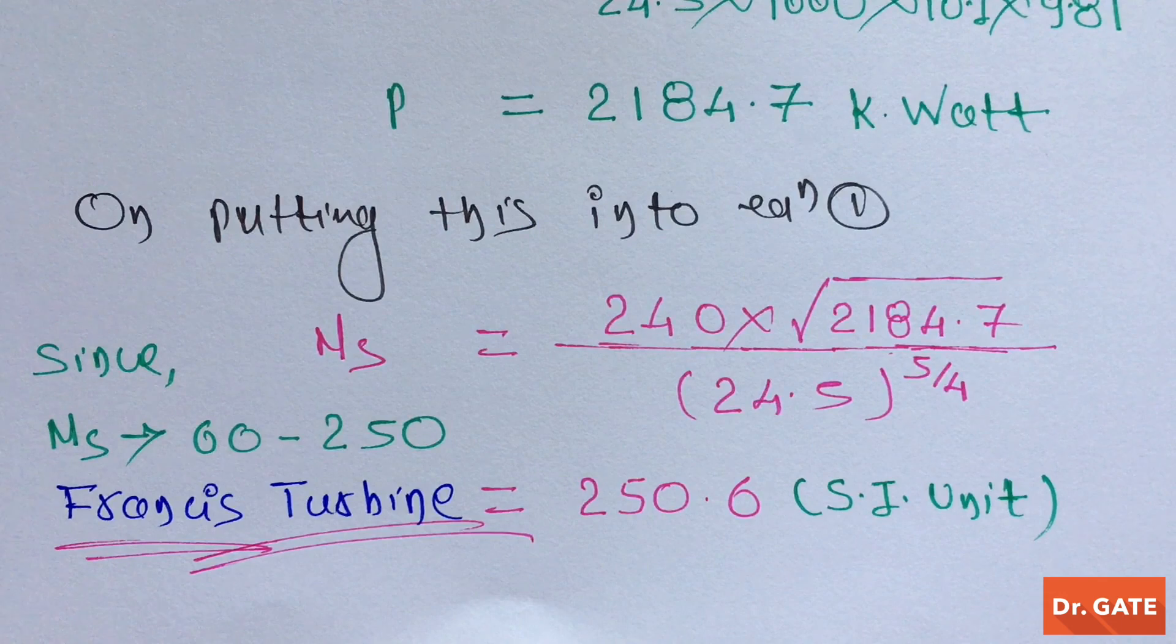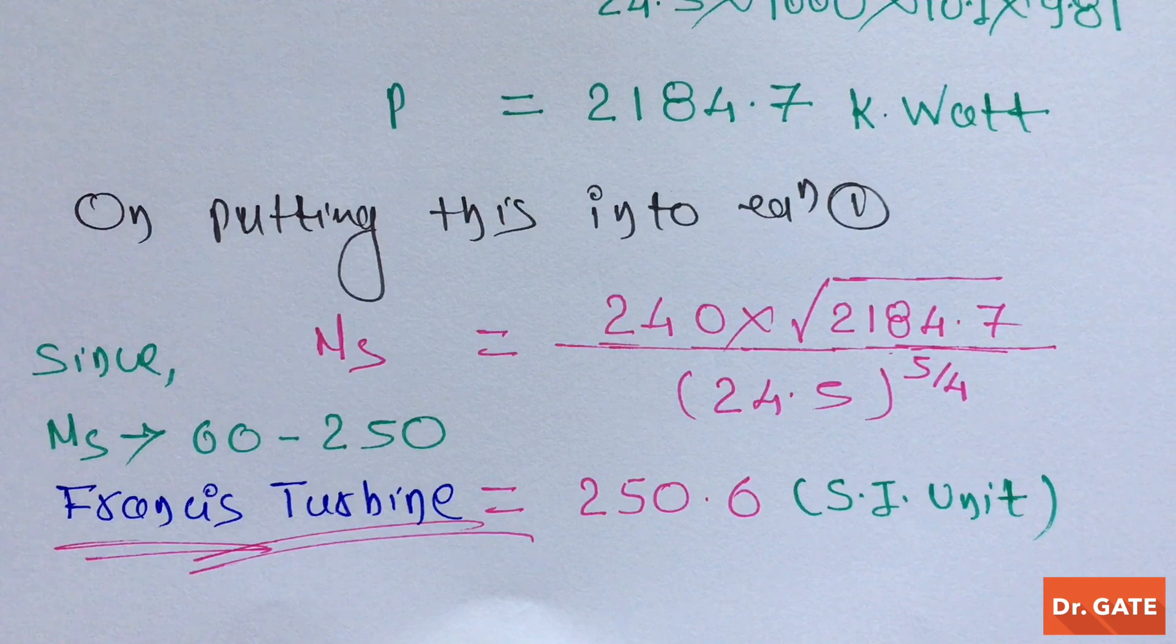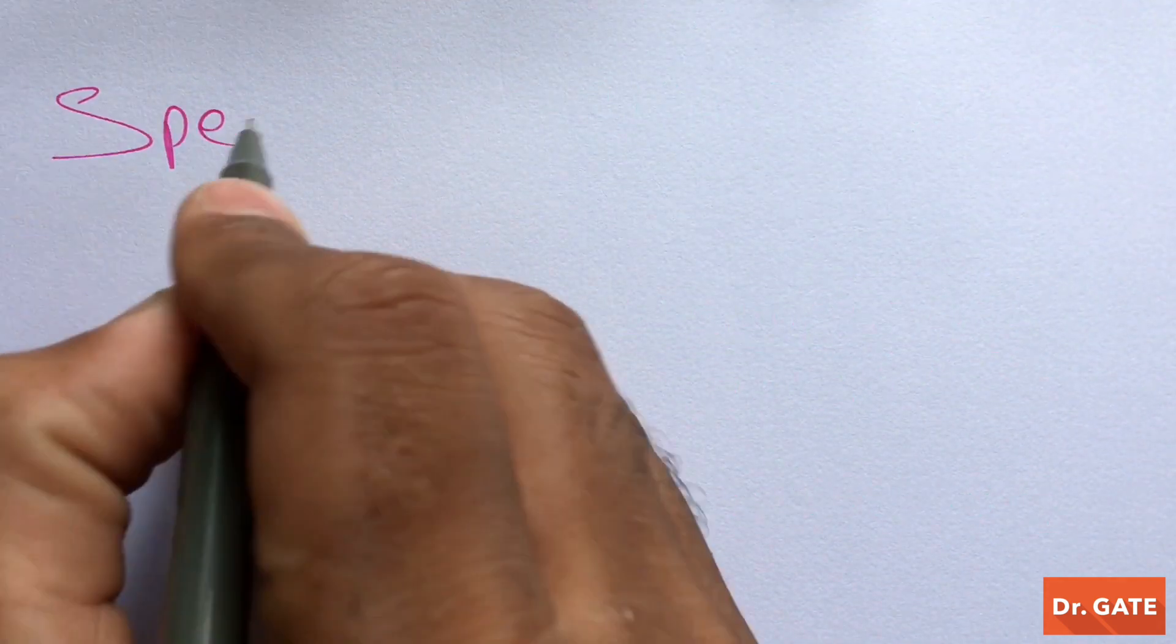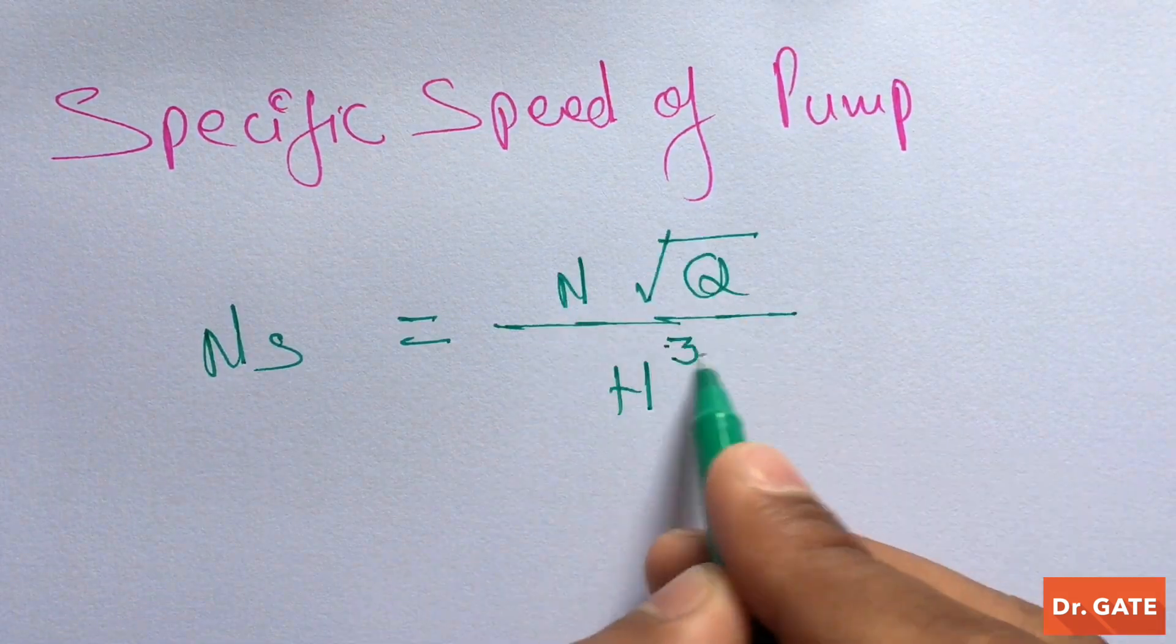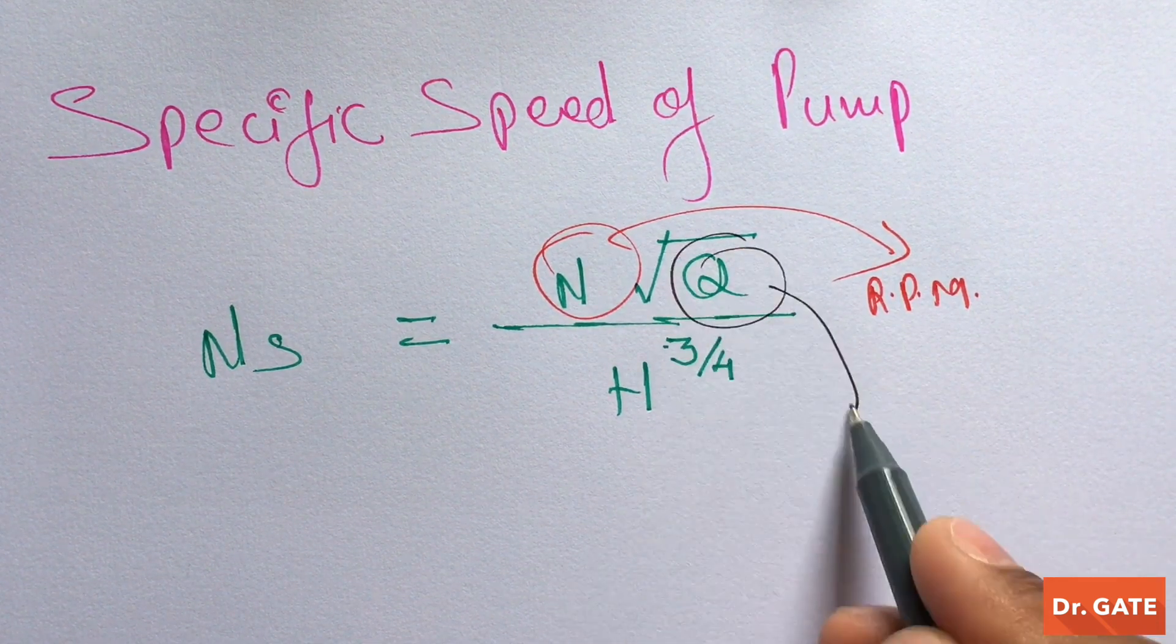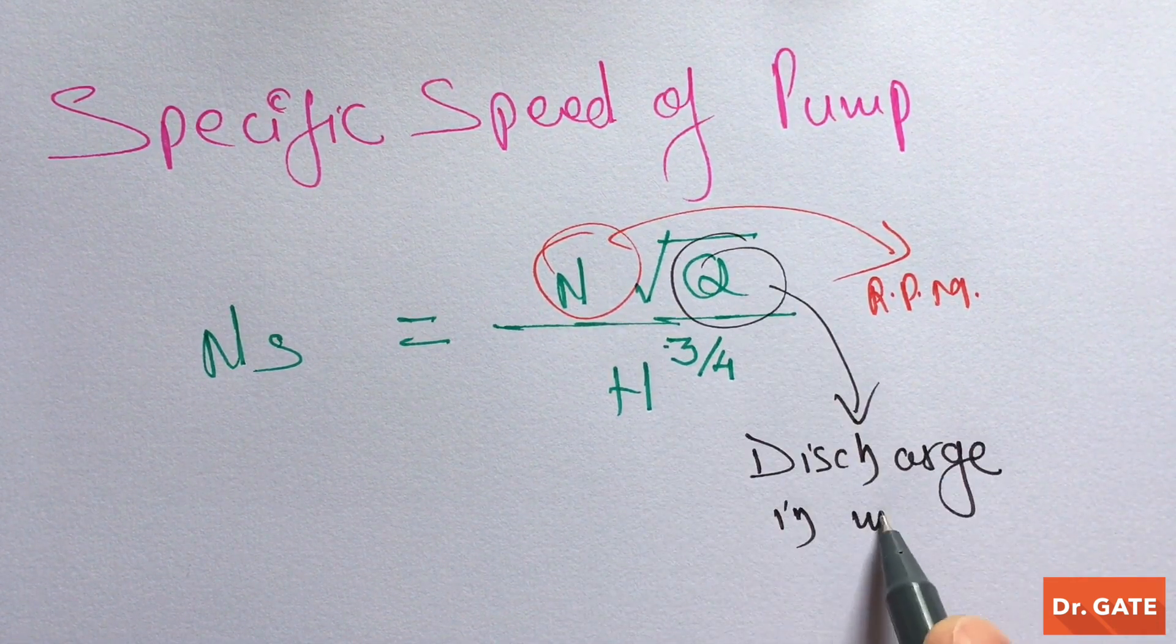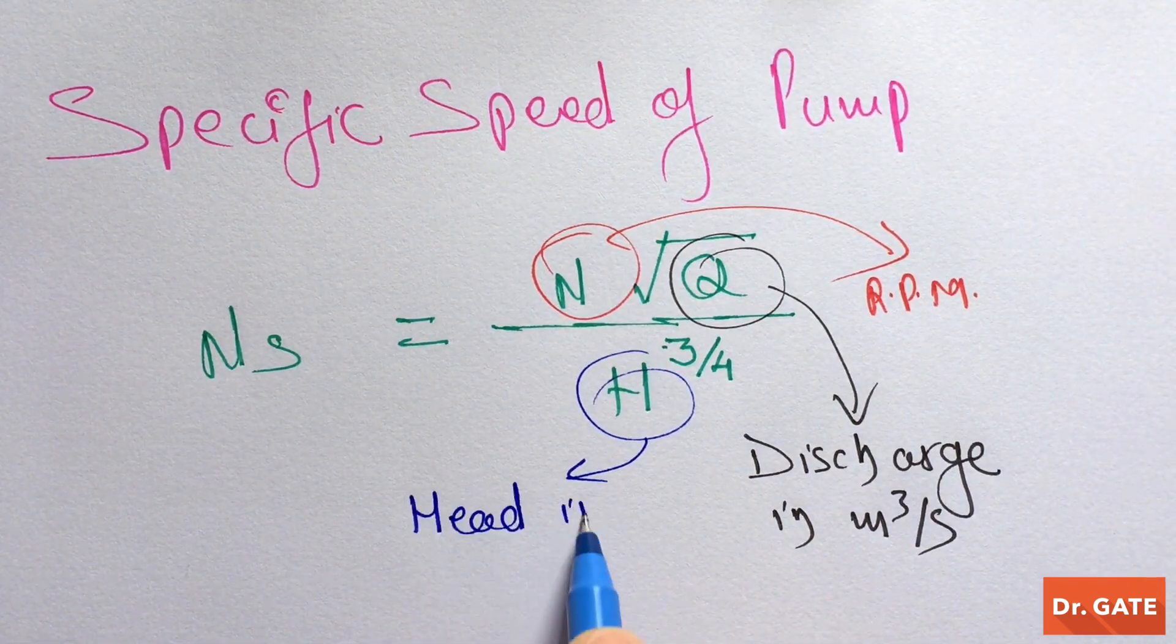I think now you know what is the specific speed and what is its physical significance. If you still have any doubt regarding this, you can ask me in the comment section. And in case if you are wondering what is the expression for specific speed of the pump, then it is this. Where this is the RPM of the pump impeller, and this is the discharge in meter per second, and this is the head in meter.